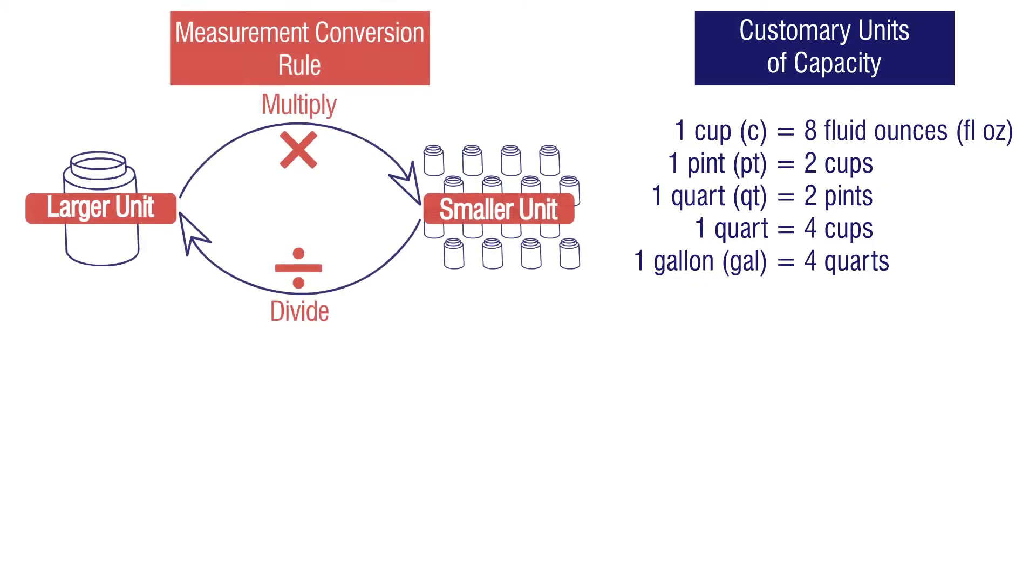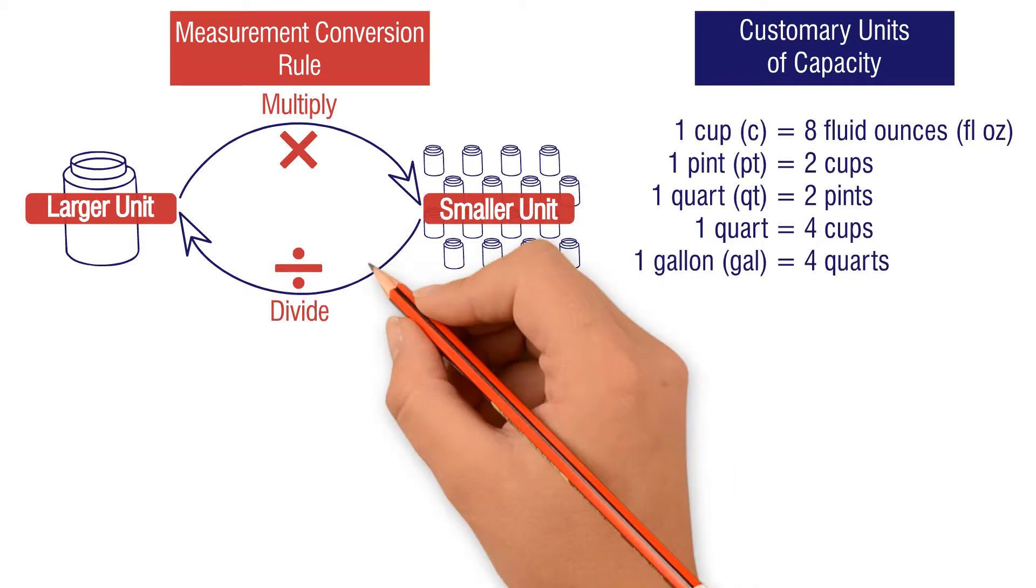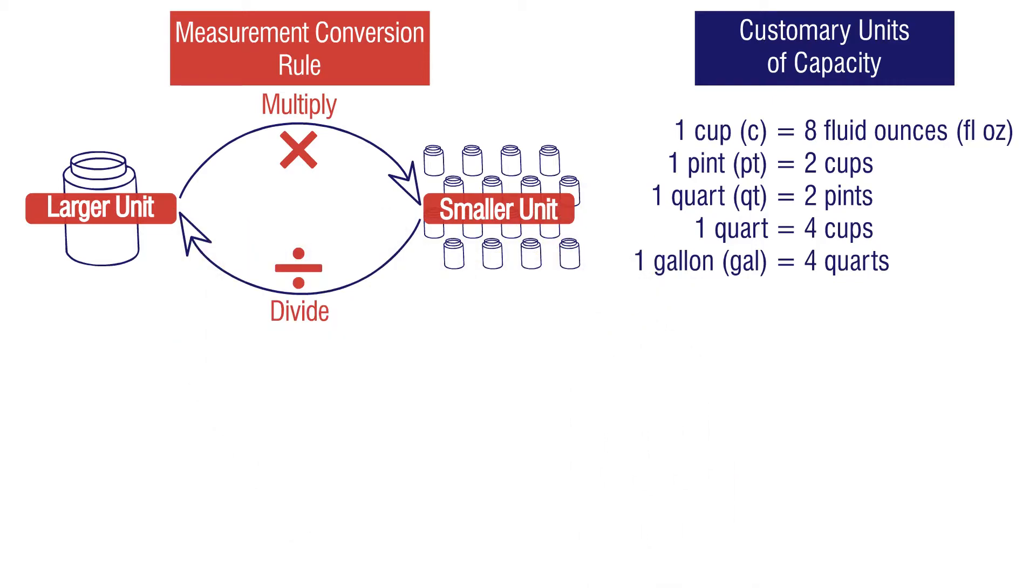We can convert from one unit of customary capacity to another by multiplying or dividing. To go from larger to smaller units, we need to multiply. To go from smaller to larger units, we need to divide.